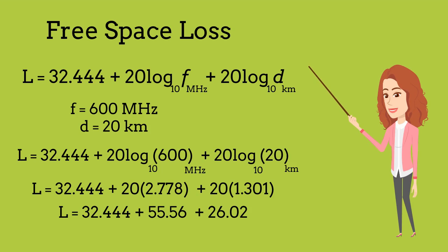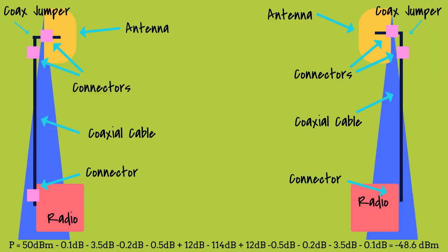Using this formula, we can calculate the free space path loss. Let's use a signal of 600 MHz, 20 km from the transmitter. We come up with a free space path loss of 114 dB, so we can now put that calculation into our link budget.